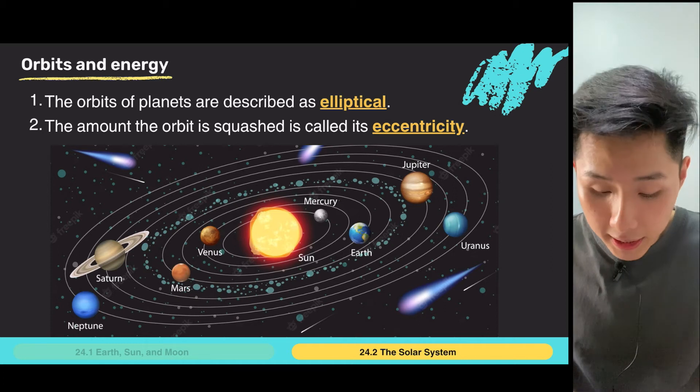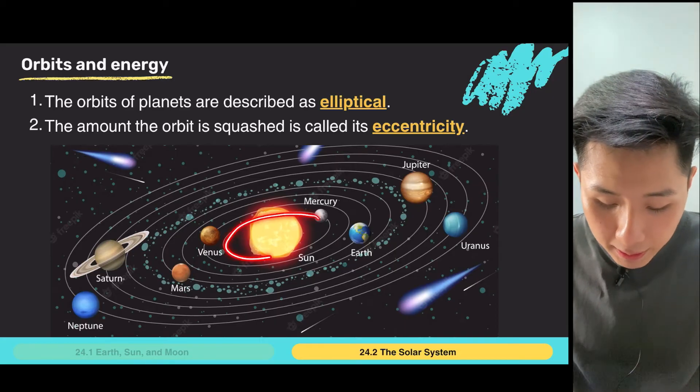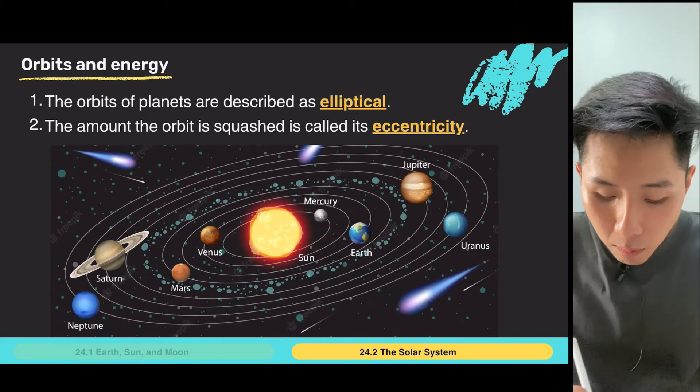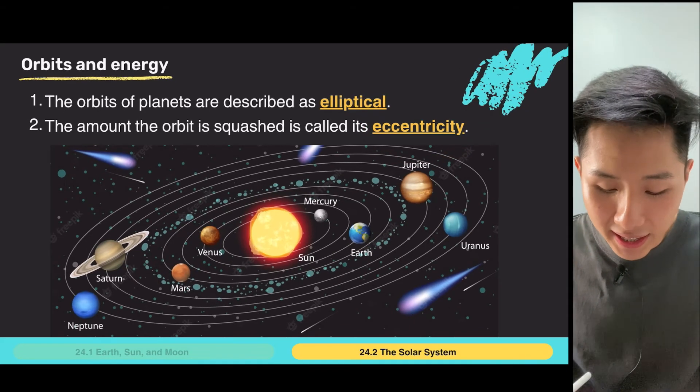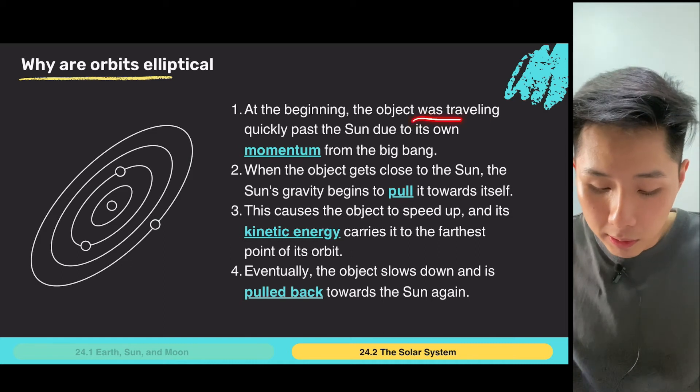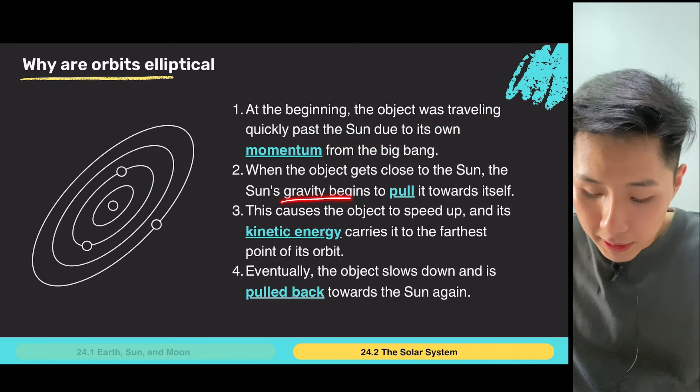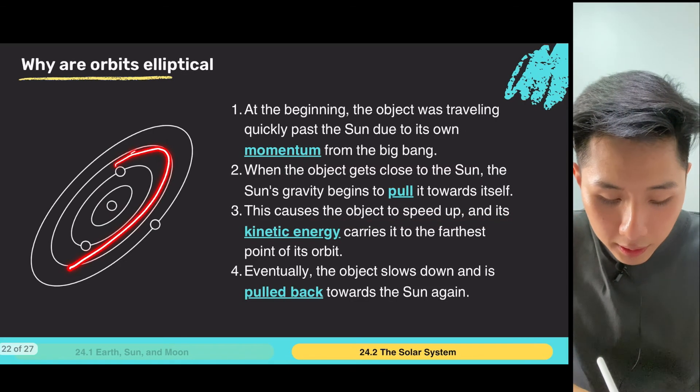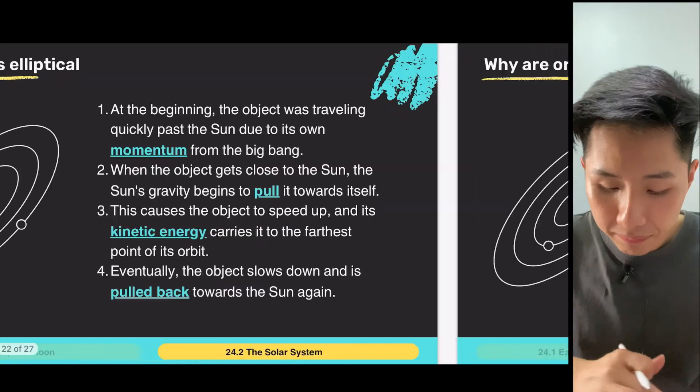And also, orbits and energy. And if you look at it, the planets here, they don't travel, they don't orbit in a circular fashion. In fact, it's a little bit elliptical, like an oval. So, that's how we describe the shape of the orbit. We call it elliptical. And how much it is, like how oval it is, there's a term for it called eccentricity. Alright? So, that's just some keywords and vocabularies. And the reason why these orbits are elliptical is because initially, the object was traveling quickly past the sun due to its own momentum. But as the object moved further and further from the sun, the sun's gravity began to pull it towards itself. This causes the object to speed up. So, speed up and then slow down and come back to the sun again. So, this explains why is it that the shape of the orbit is elliptical.